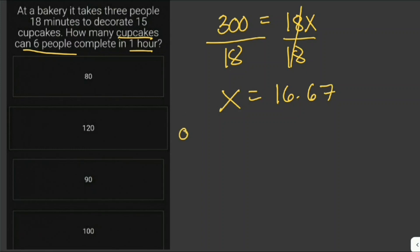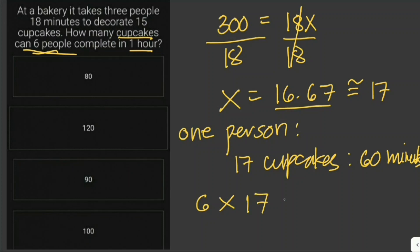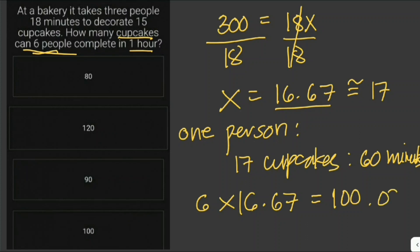So one person can decorate approximately 16.67 cupcakes in 60 minutes. For six people, we multiply 16.67 by 6, which gives us 100.02 cupcakes — we round this off to approximately 100 cupcakes. So the answer is 100 cupcakes.